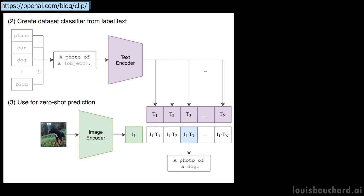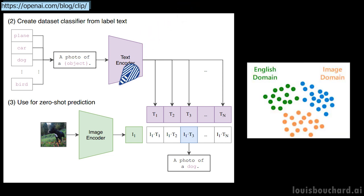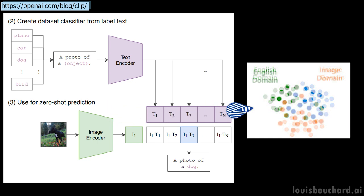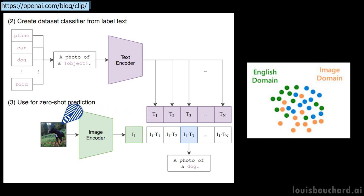Quickly, CLIP is a model developed by OpenAI that can basically associate a line of text with an image. Both the text and images will be encoded similarly so that they will be very close to each other in the new space they are encoded in, if they both mean the same thing. Using CLIP, the researchers could understand the text from the user input and generate an image out of it. If you are not familiar with CLIP yet, I recommend watching a video I made about it together with DALL-E earlier this year.